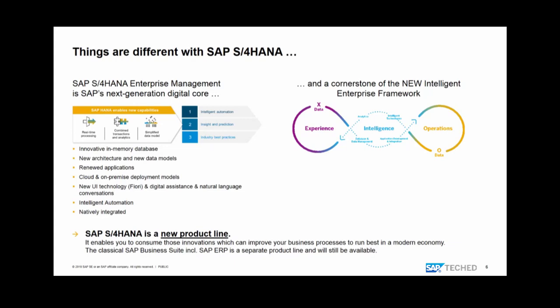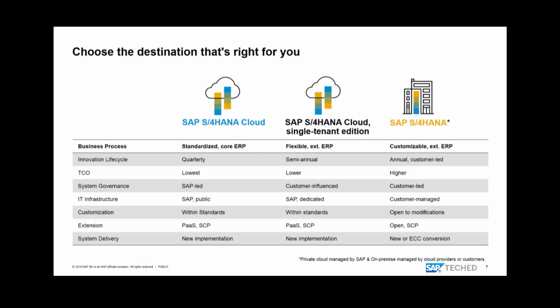The classical SAP Business Suite — the ERP system, Supply Chain Management, Supplier Relationship Management, CRM, and others — will still be available and has its own maintenance cycle. As mentioned, we have different deployment models: SAP S/4HANA Cloud, SAP S/4HANA Cloud Single Tenant Edition, and SAP S/4HANA On-Premise.